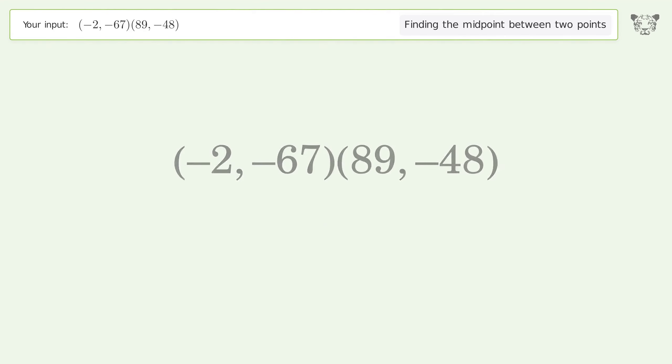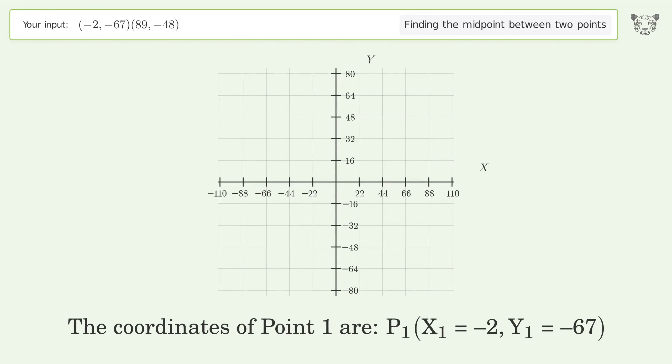The coordinates of point 1 are x₁ = -2, y₁ = -67. The coordinates of point 2 are x₂ = 89, y₂ = -48.